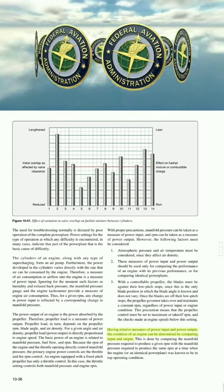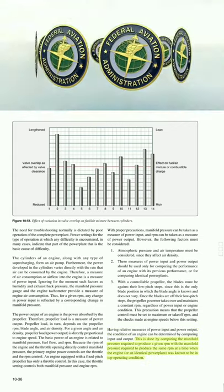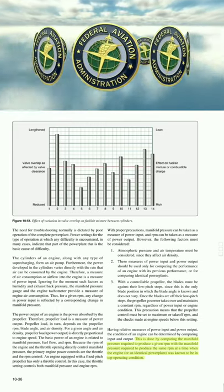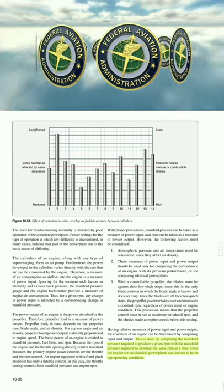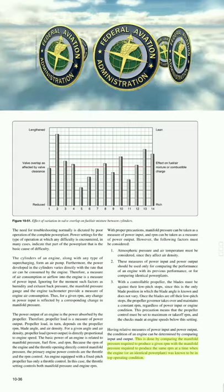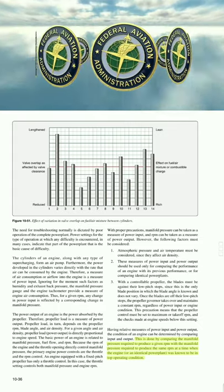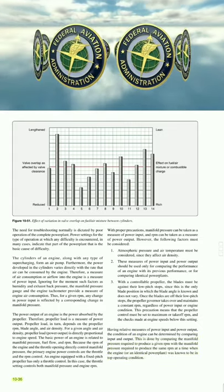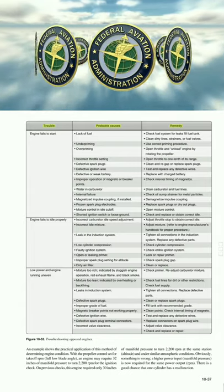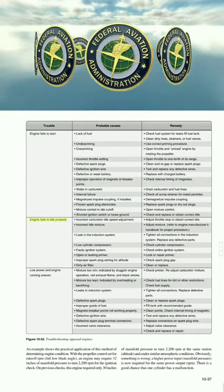With relative measures of power input and output, engine condition can be determined by comparing the manifold pressure required to produce a given RPM with the manifold pressure required to produce the same RPM when the engine or an identical power plant was known to be in top operating condition.